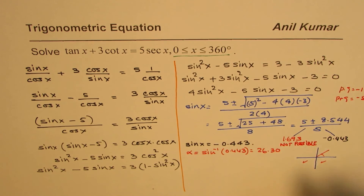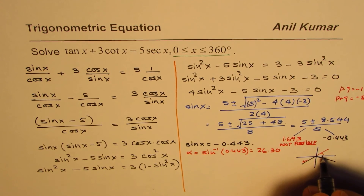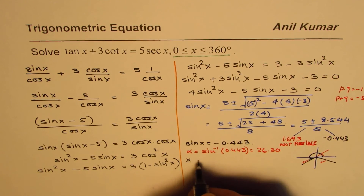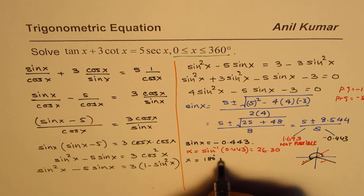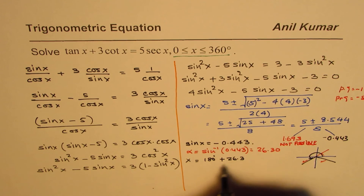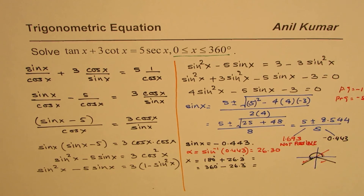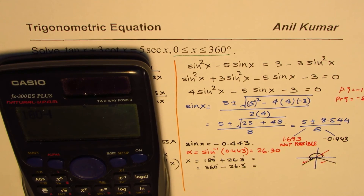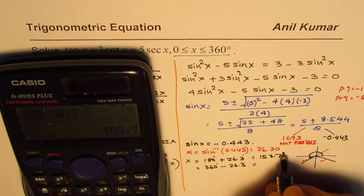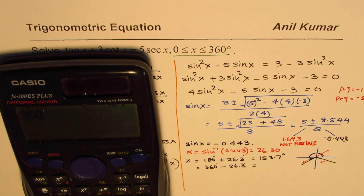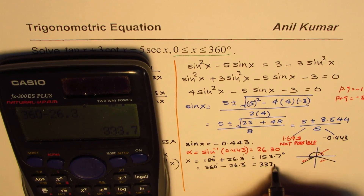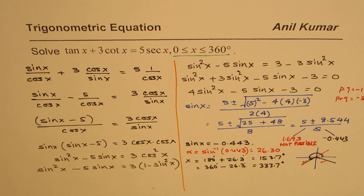With the reference angle of 26.3 degrees, the two solutions are: x equals 180 plus 26.3 degrees (quadrant 3), and x equals 360 minus 26.3 degrees (quadrant 4). Calculating: the first solution is 180 + 26.3 = 206.3 degrees, and the second is 360 minus 26.3 = 333.7 degrees.